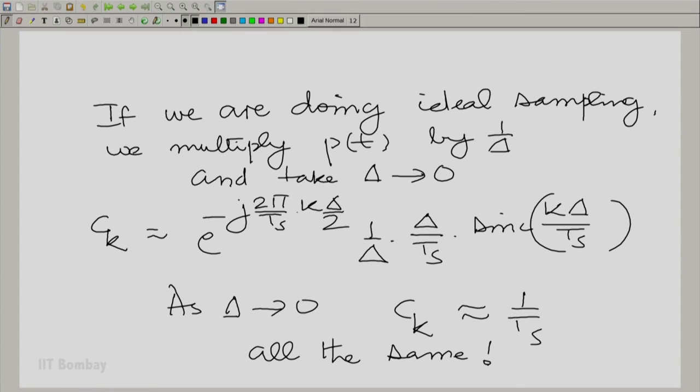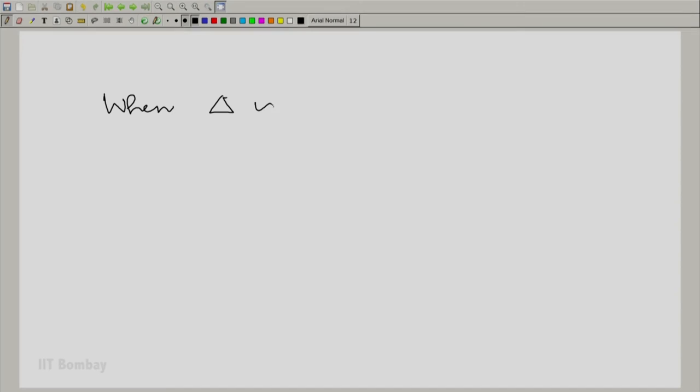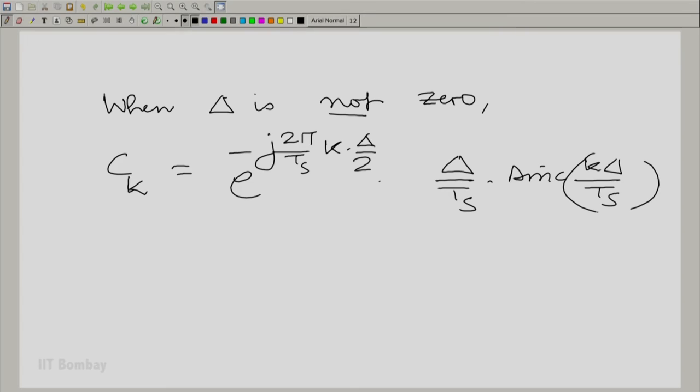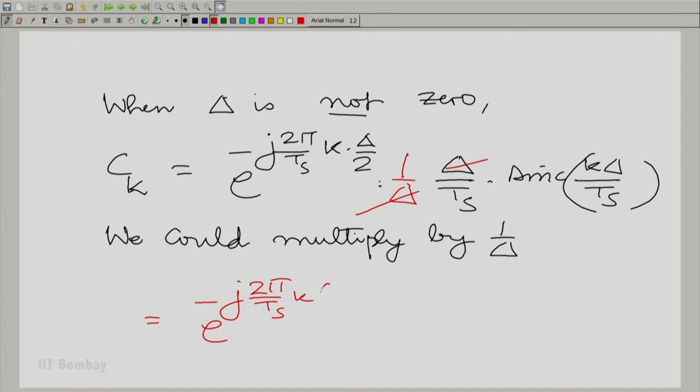But now take the situation where delta is not 0. We have intentionally kept delta not 0. What c_k is of the form e raised to the power j 2π/t_s times k delta/2. And of course, as we did instead of multiplying by 1/delta, we could actually multiply by 1 by there is no problem. So we could multiply by 1/delta here too, if you want to keep the area the same. So then you would get a 1/delta term here and then the delta would go away. So that would give you e raised to the power minus j and so on. So at least this delta would not be outside.